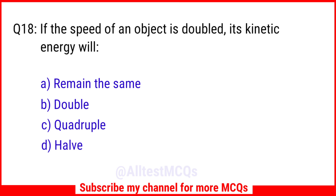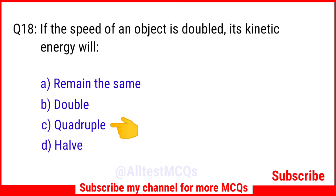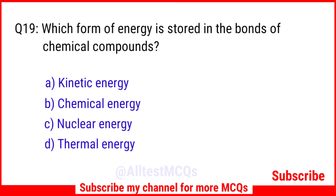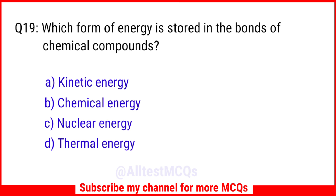The right answer is Option C: Quadruple. Question No. 19: Which form of energy is stored in the bonds of chemical compounds? The right answer is Option B: Chemical energy.